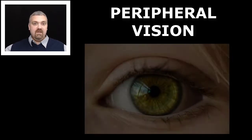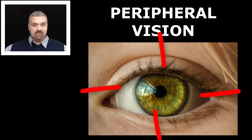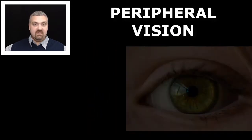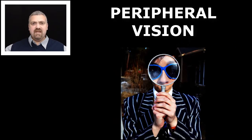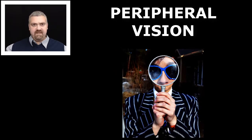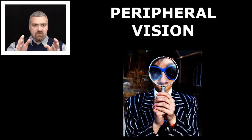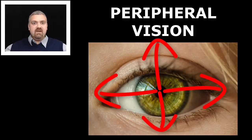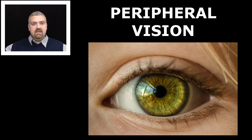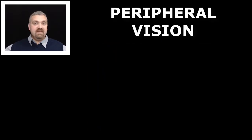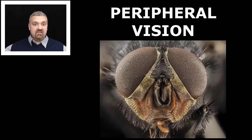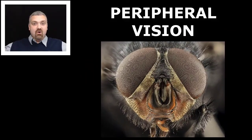Next, we have peripheral vision. Your central vision is where you can see things very clearly with great color detail, but you have to be looking right at something. Your peripheral vision is everything out here all around — not as clear, but still very important. So your peripheral vision is what allows you to see all around.